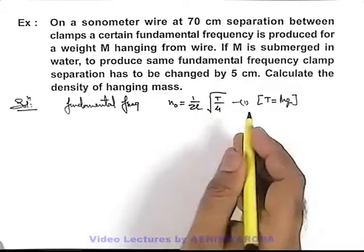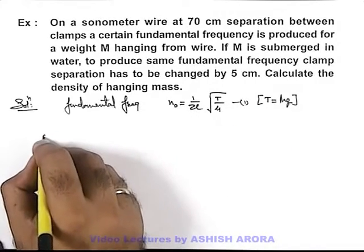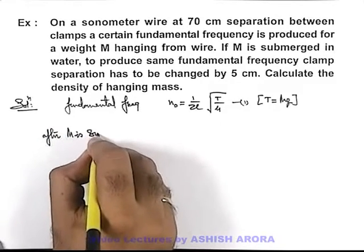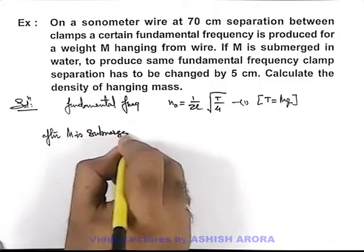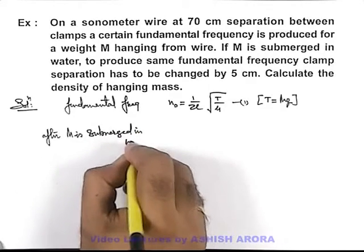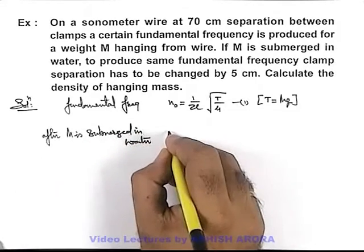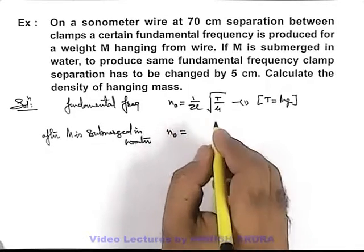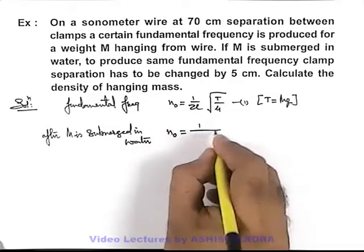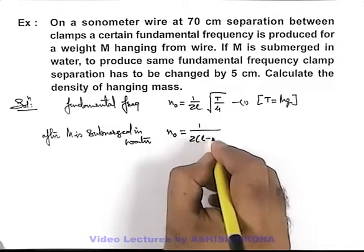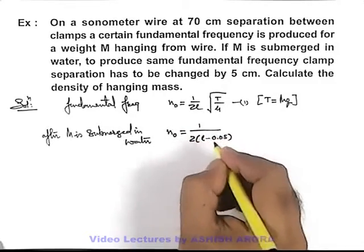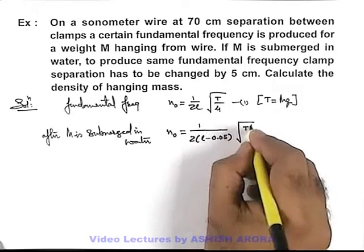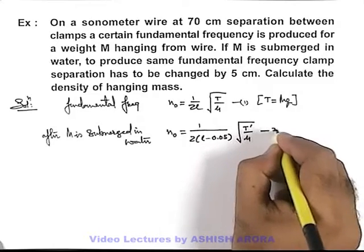When the mass is submerged in water, after M is submerged in water, the new fundamental frequency is the same but length has to be changed by 5 centimeters, so it will be 1/(2(l - 0.05))√(T'/μ), which is our equation 2.